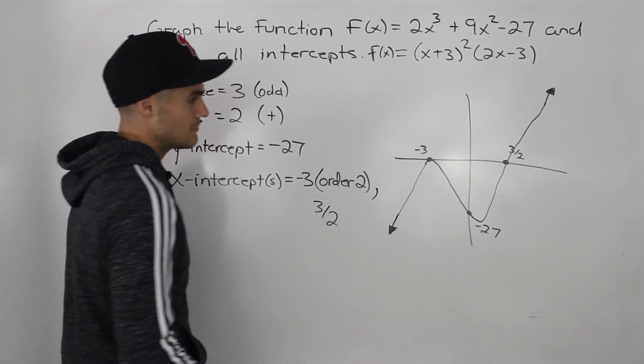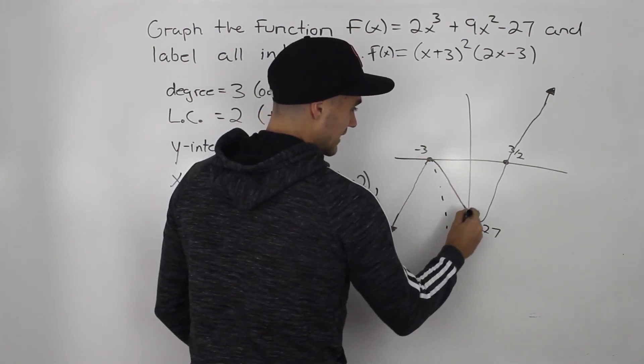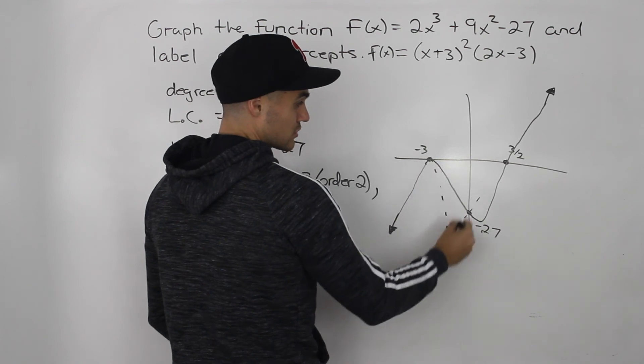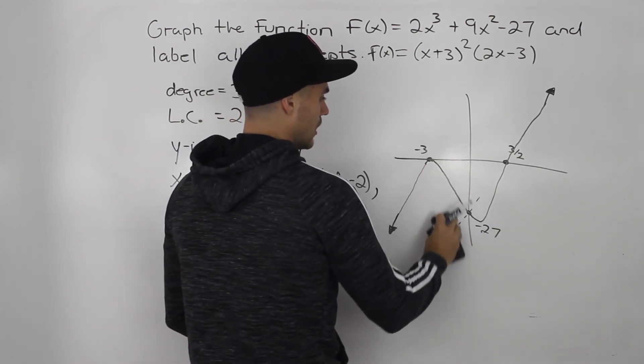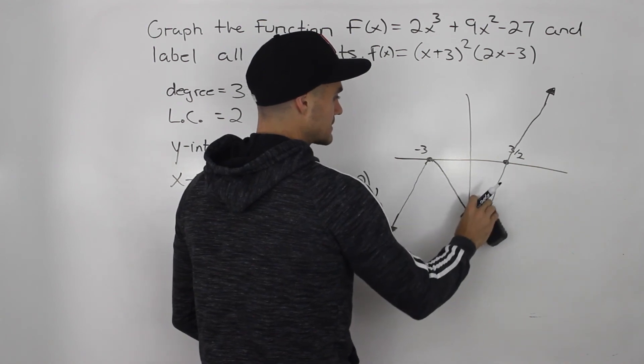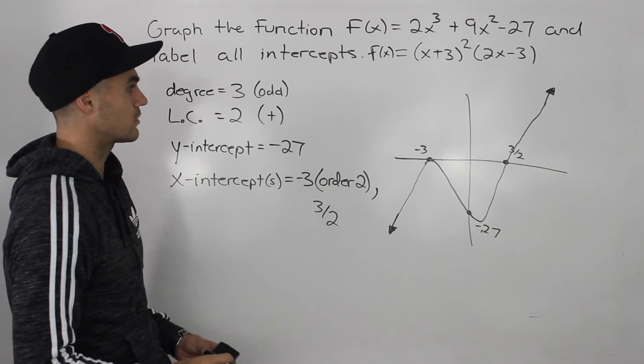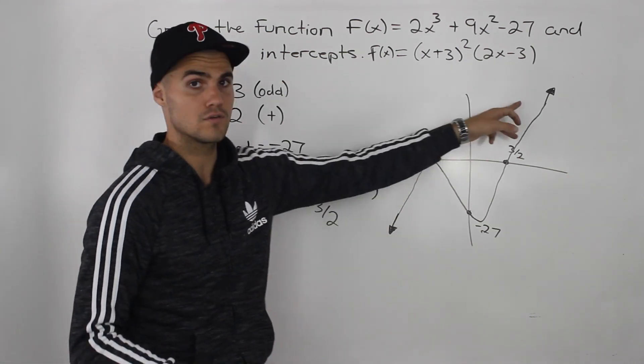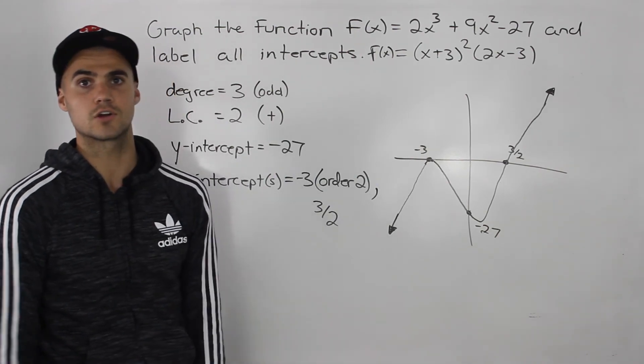Now the shape might be different. Like I'm not even sure if this function maybe goes like that. Maybe it turns here. I made a turn here in the graph. Not too sure, but we're not getting into that much detail in this course. Basically, the most important thing is you know the end behaviors, the x-intercepts, and the y-intercepts, and then you're good to go.